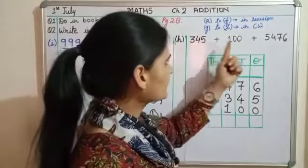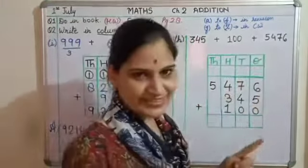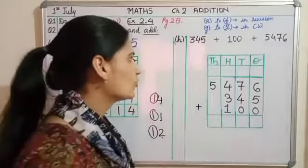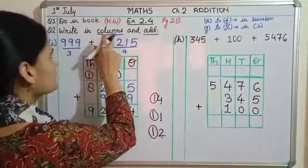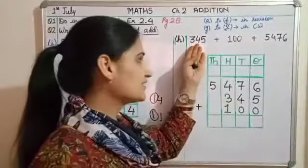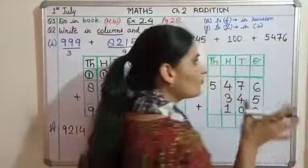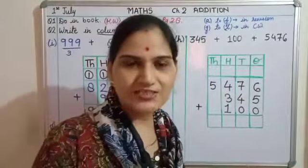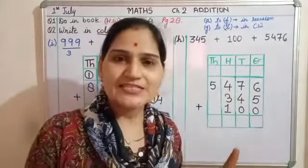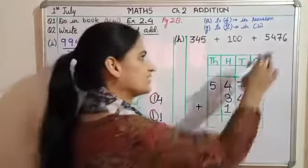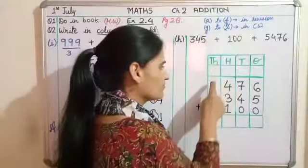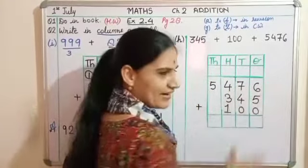Part (h) I have taken: three hundred forty five plus one hundred plus five thousand four hundred seventy six. We have to add three numbers. We can write three numbers together, arrange them in columns, and add them. No problem. So what columns are we talking about? Write in columns. So columns are these - one is in the thousands place. These are the place value chart columns. Three forty five is a three digit number, hundred is a three digit number, and the last one is a four digit number. So we need four columns - the biggest number has four digits, so four columns are needed.